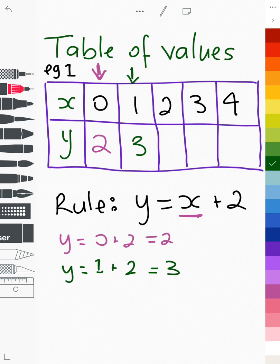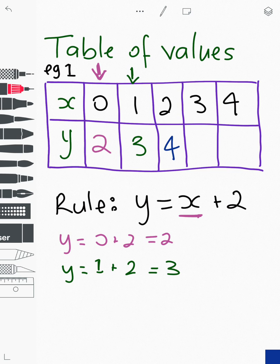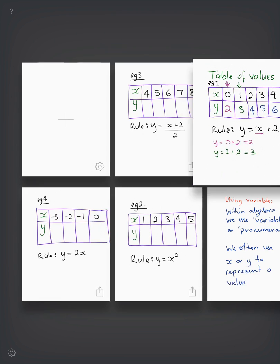And so on and so forth. Let's continue on with the rest of that row. 2 plus 2 is 4, 3 plus 2 is 5, and 4 plus 2 is 6. Quite a simple example. Now let's move on to another example.